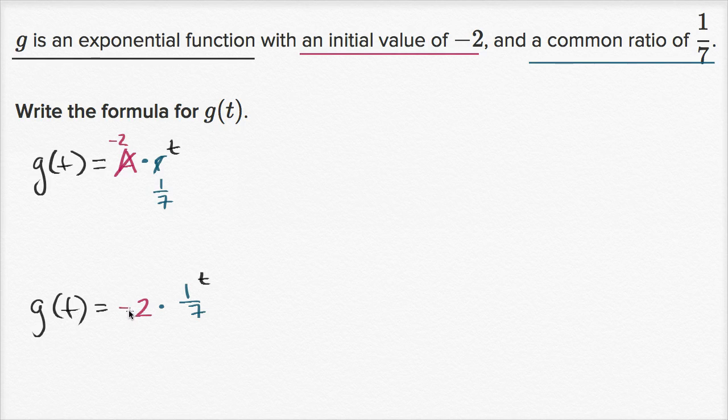So that would be our initial value. And then if you think about every time you increase t by one, you're going to multiply by one-seventh again. And so the ratio between successive terms is going to be one-seventh. And so that's why we call that the common ratio. Hopefully you found that interesting.